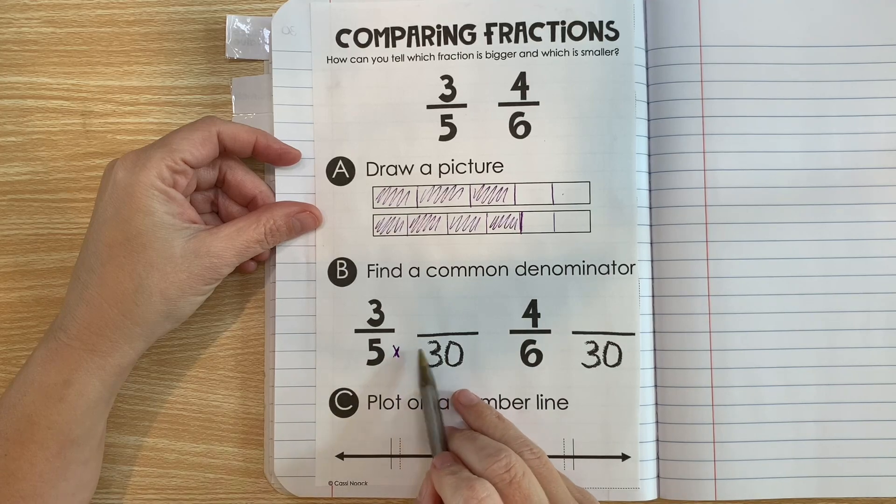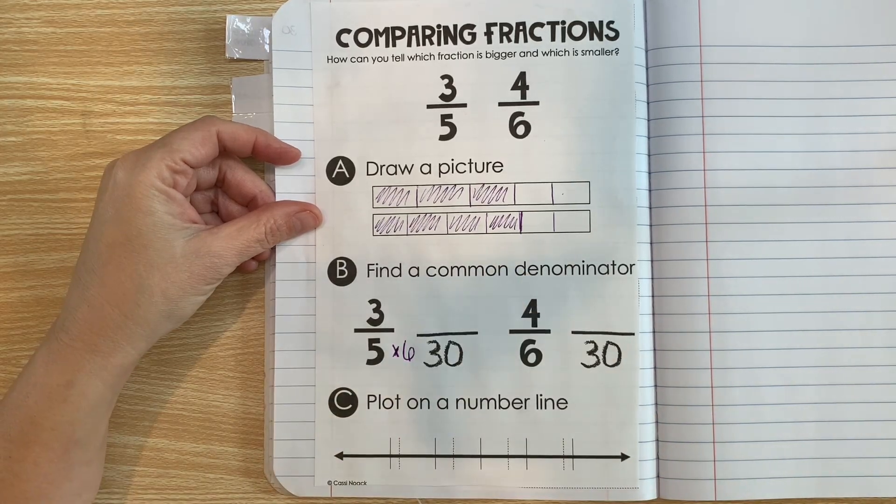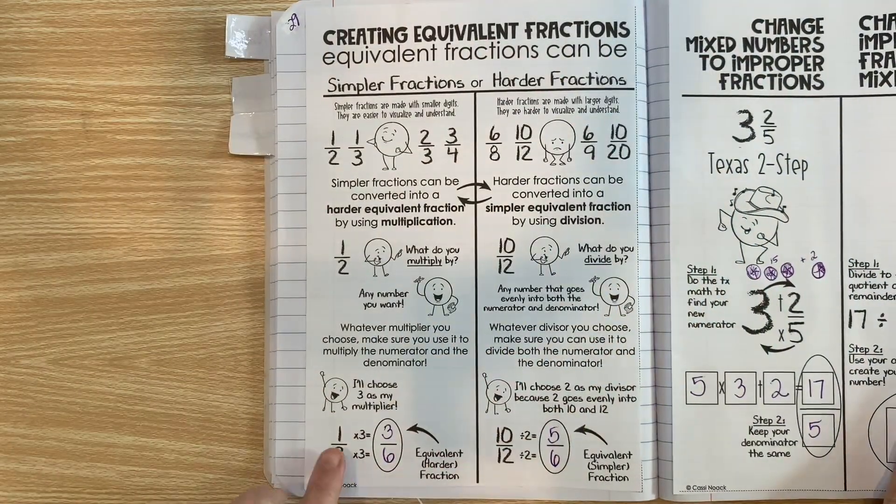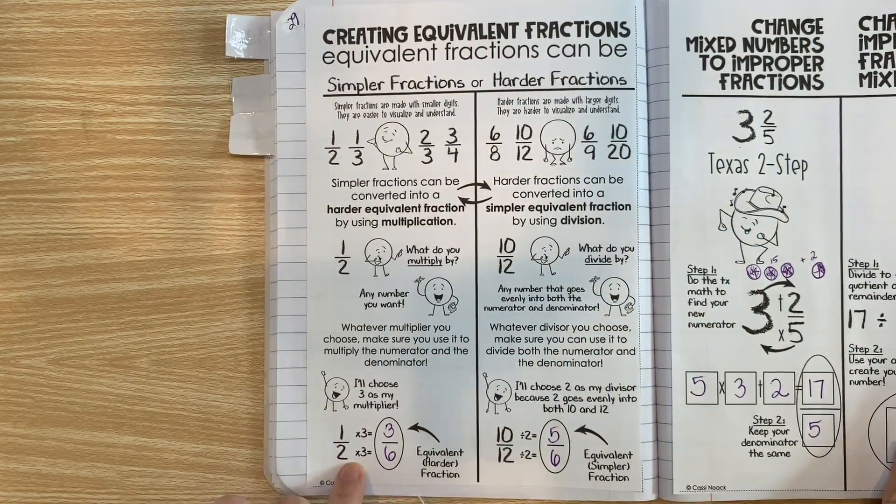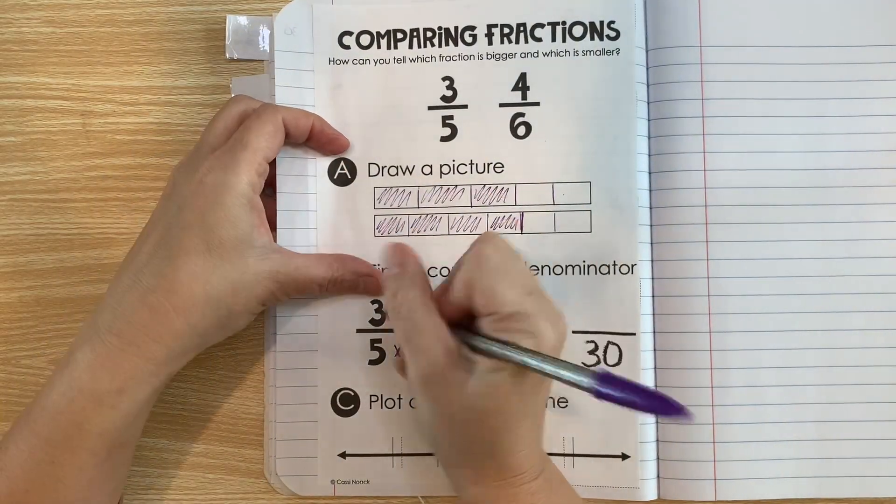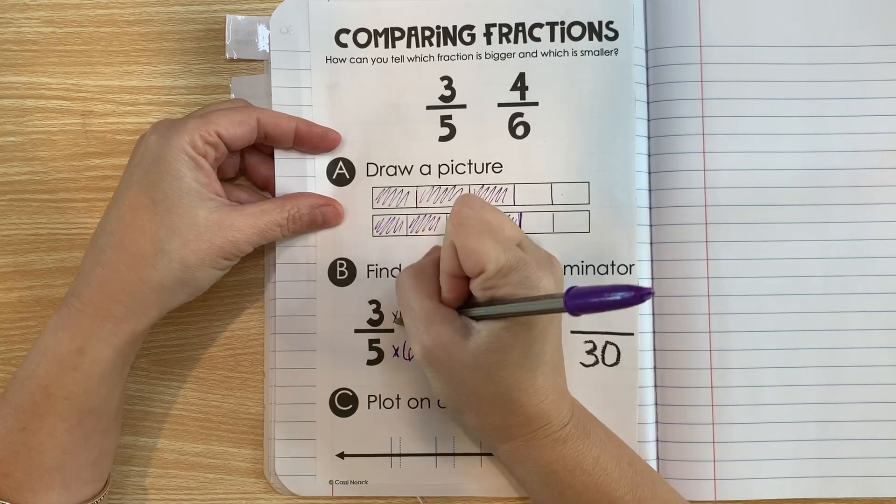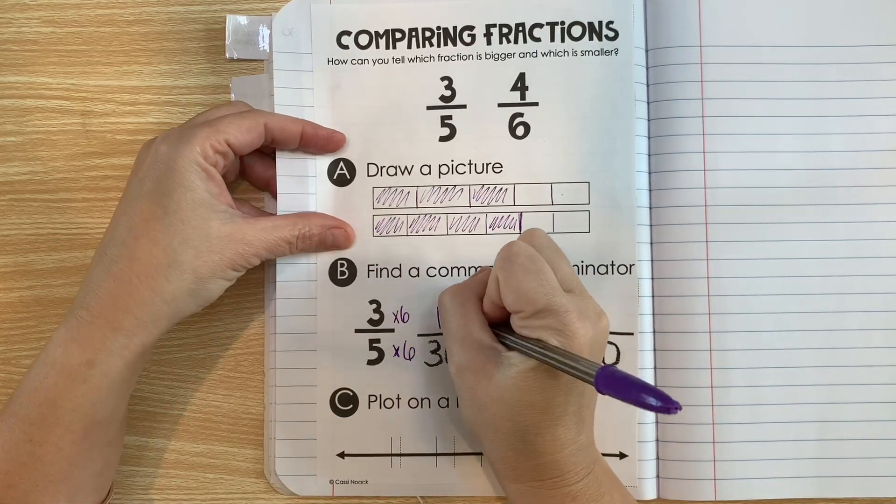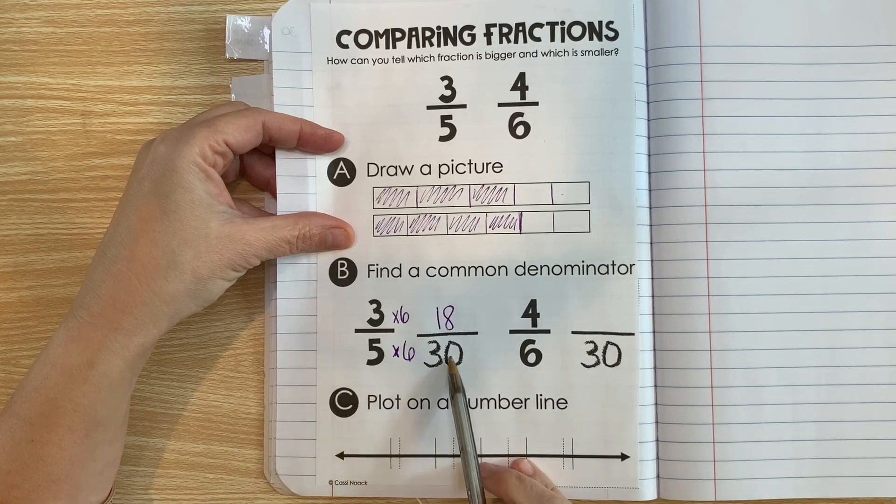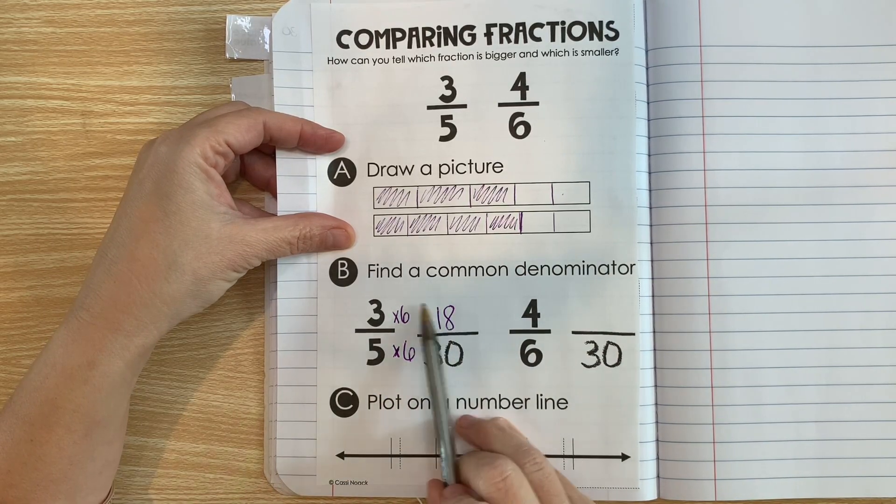Well, it's getting bigger, so we know we multiplied. What did we multiply by? Five times what is 30? Well, 5 times 6 is 30. Now remember our rule: whatever you choose to multiply by, you have to do for the numerator and the denominator. So since we multiplied by 6, we have to multiply by 6. Three times 6 is 18.